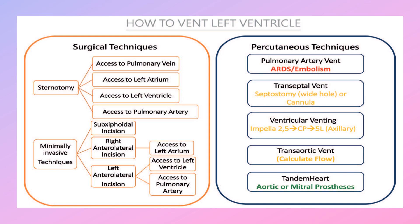Left ventricular venting can be done through atrial or ventricular unloading via surgical techniques including sternotomy to access the pulmonary vein, pulmonary artery, left atrium, and left ventricle. Minimally invasive techniques use a subxiphoid or right or left anterolateral incision. Percutaneous techniques include pulmonary artery venting, transseptal septostomy, cannula ventricular venting through Impella, trans-aortic venting, and TandemHeart.